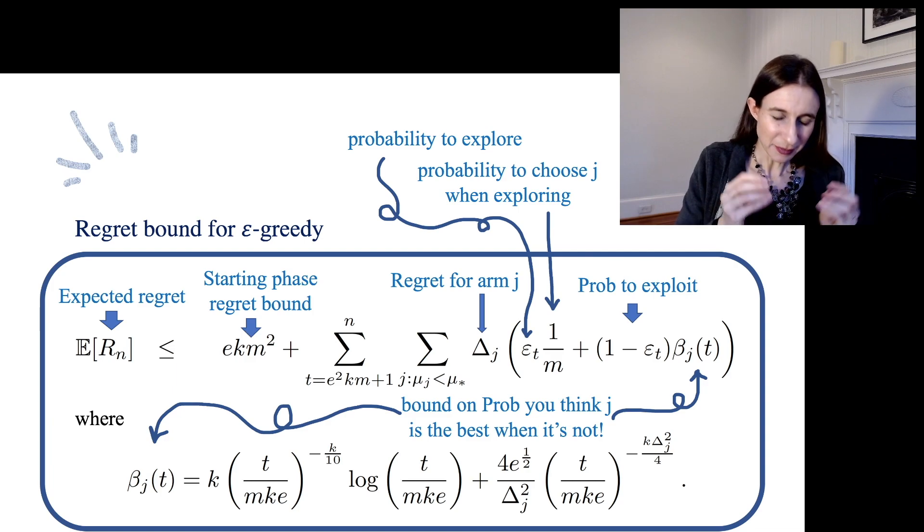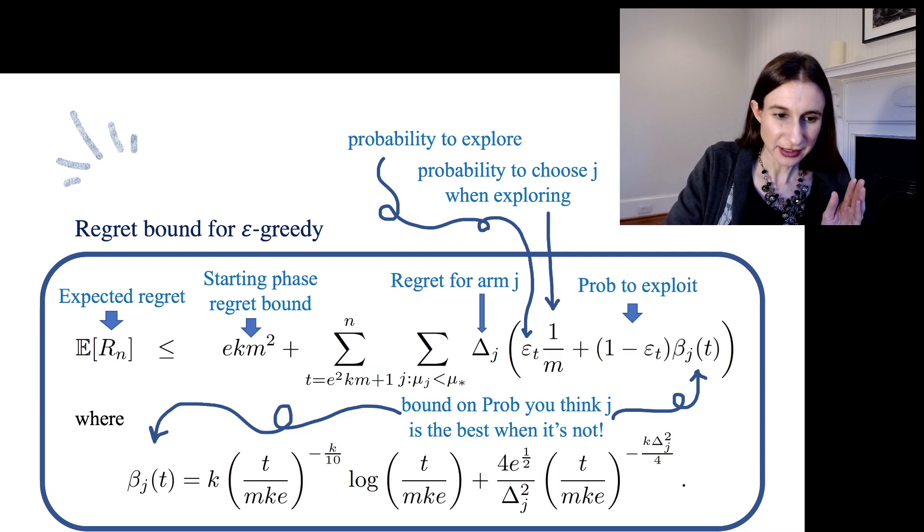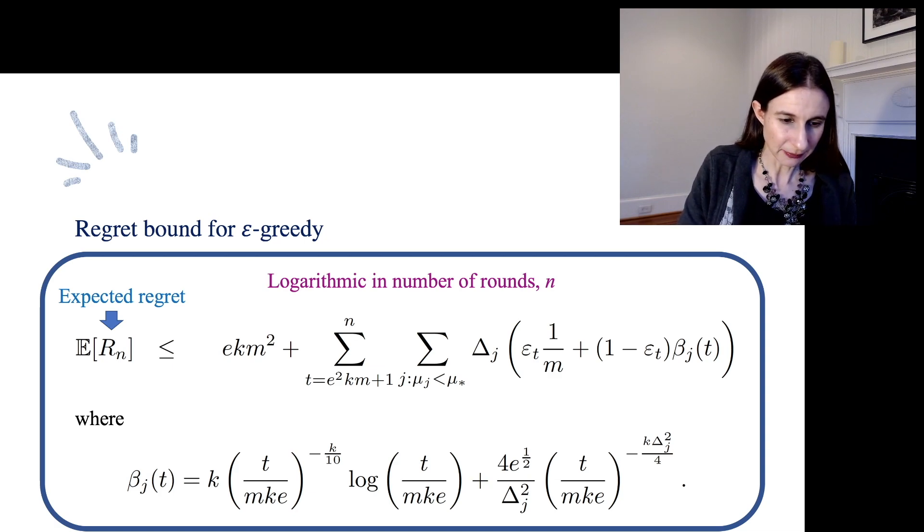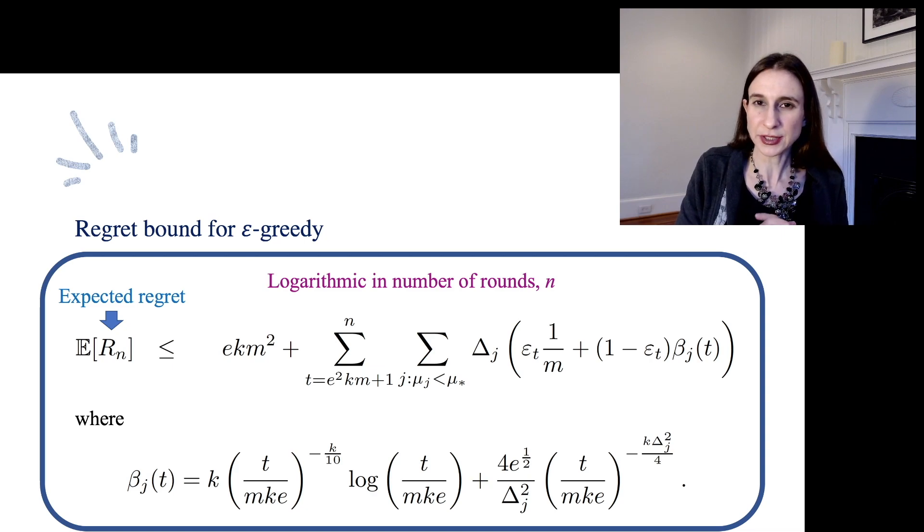There's really one important thing I want you to take away from this bound, which is the fact that it's logarithmic in the number of rounds, which is n. So the regret grows logarithmically with n. How do we know that it grows logarithmically in n?